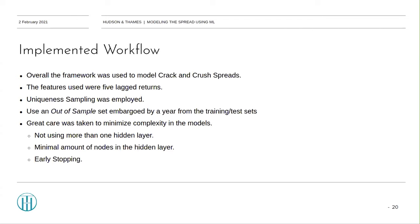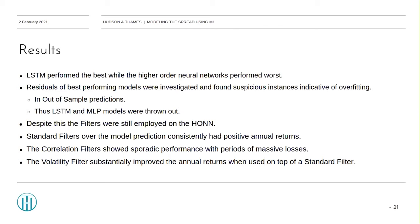Results. LSTM performed best while the higher-order networks performed worst. But after further investigation of the predicted out-of-sample residuals, suspicious prediction instances were found. For example, in the crack spread, the LSTM managed to predict an outlier, which was an exogenous political event that should have been impossible to predict. Thus, the predictions from the best-performing models were thrown out due to obvious overfitting.